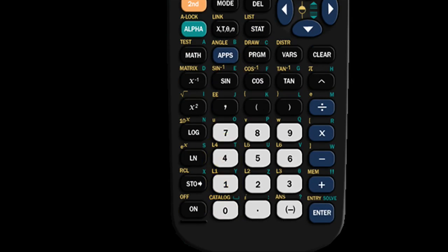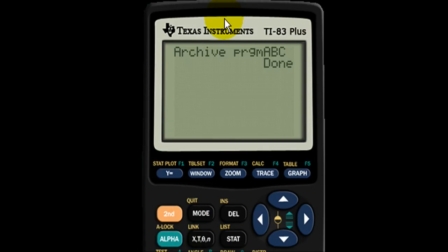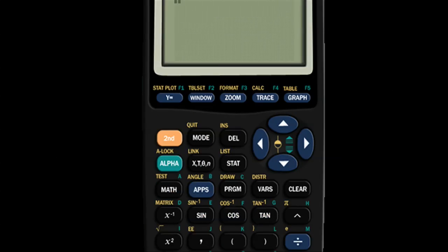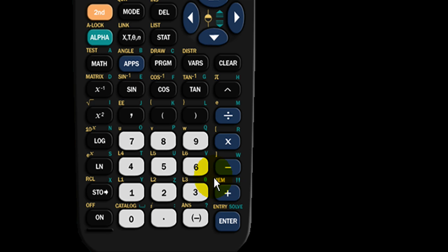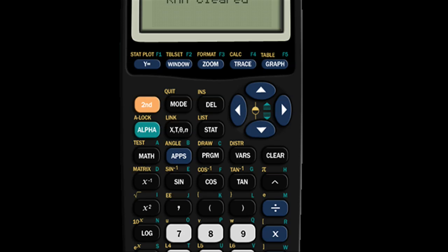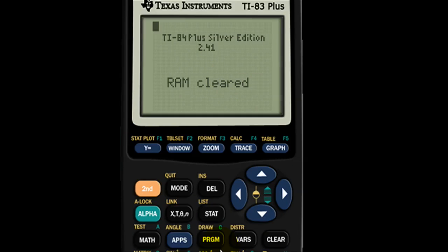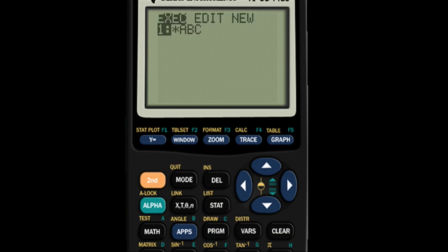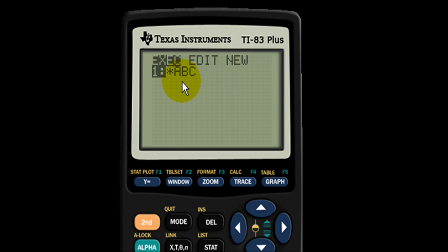Well when I delete the RAM by doing the same method, second mem seven one two and it says RAM cleared. When I go back to program, wow look ABC is still there.